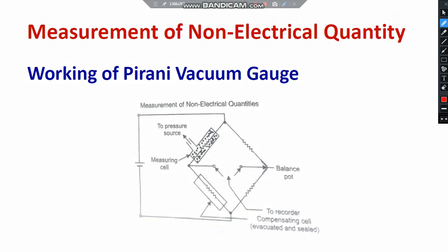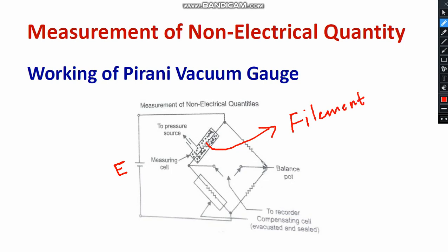Now I will show the typical diagram of the Pirani type vacuum gauge. We require an external supply to operate the bridge. As you can see, there is a tungsten filament connected directly to the pressure source where pressure is to be measured indirectly. With respect to the pressure, the filament temperature changes. It is connected to the Wheatstone bridge. A detector is placed — it may be a calibrating device or a galvanometer-type device for indicative measurement, and readings can be recorded as well.